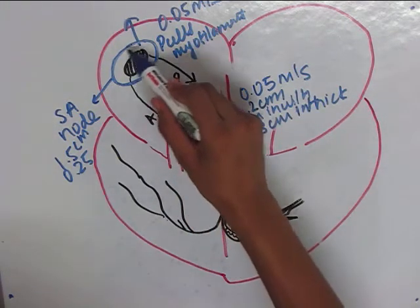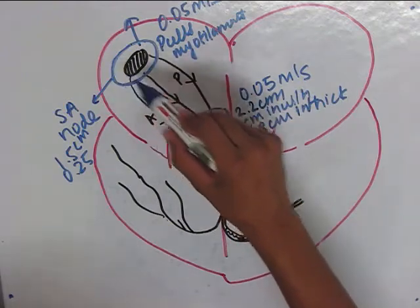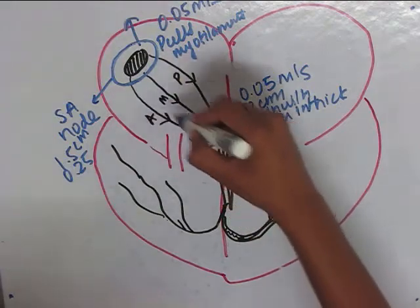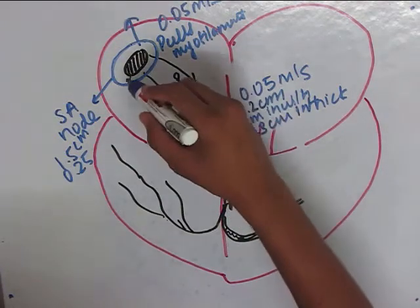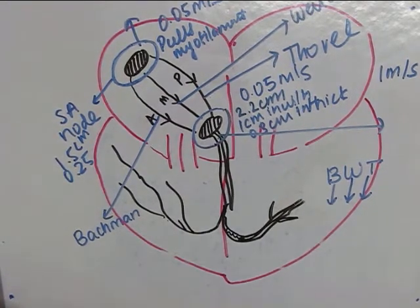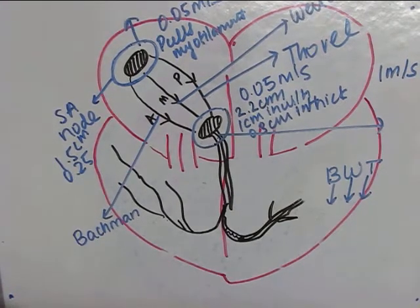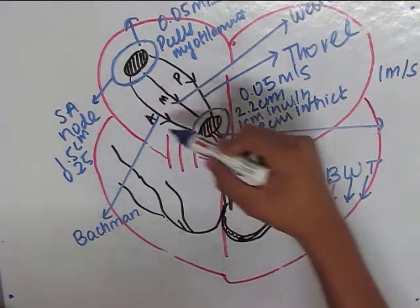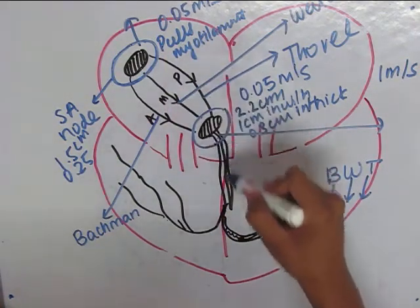How does the action potential which is generated in the primary pacemaker reach the secondary or the AV node? It is through three bundles of fibers: the anterior tract known as the tract of Bachmann, the middle tract known as the tract of Wenckebach, and the posterior tract known as the tract of Thorel. The speed of conduction of this tract is about 1 meter per second. This AV node, as soon as it receives the action potentials from the SA node, does not pass it directly. It has a delay of about 0.1 second.